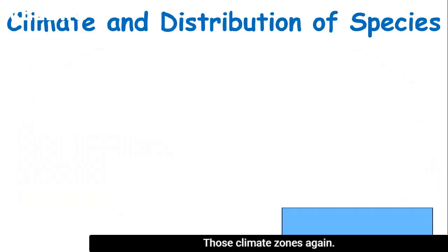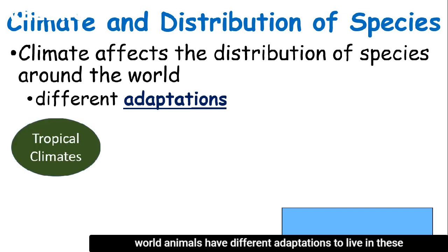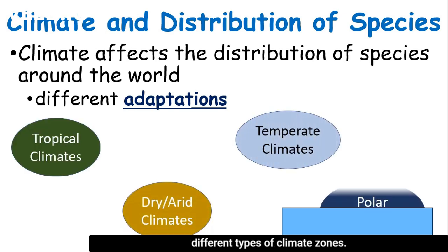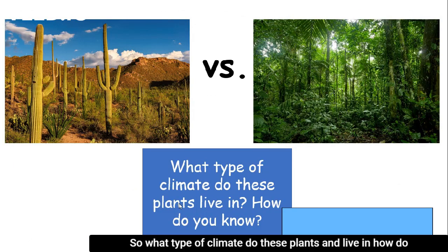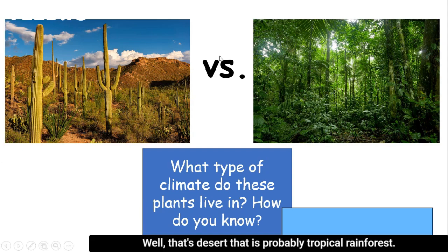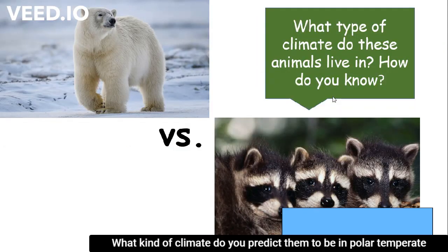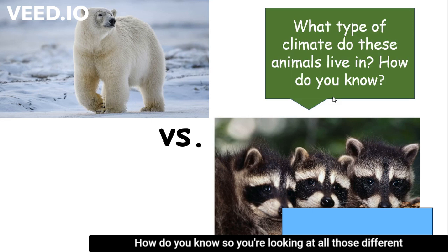Climate affects the distribution of species around the world. Animals have different adaptations to live in different climate zones — you can't move a polar bear to the Sahara Desert and expect it to survive, and vice versa. Looking at plants and animals, you can identify their climate zone by their adaptations: desert versus tropical rainforest plants look very different. A polar bear with thick white fur lives in a polar climate; animals with thinner fur likely live in a more temperate climate.